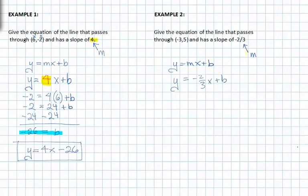In example two, we're asked to give the equation of the line that passes through (-3, 5) and has a slope of -2/3.